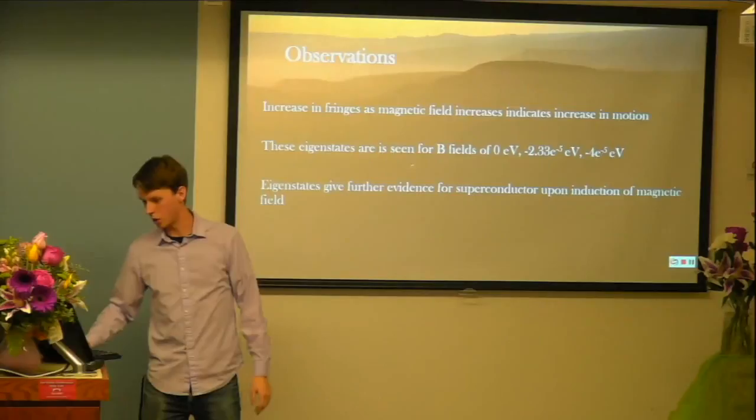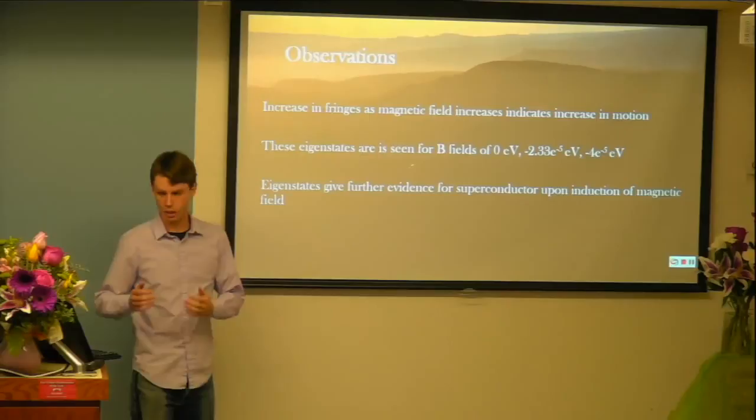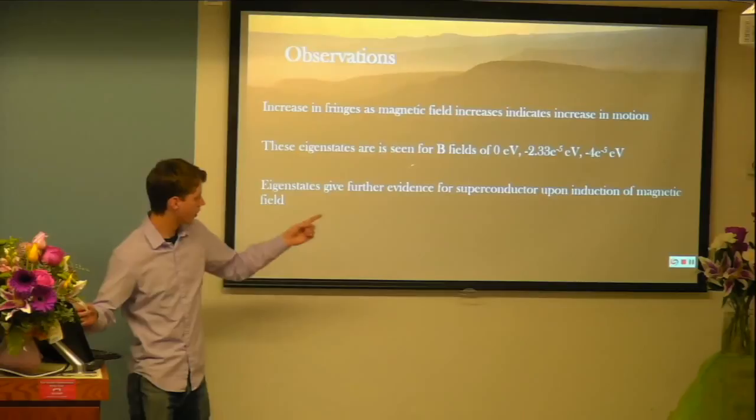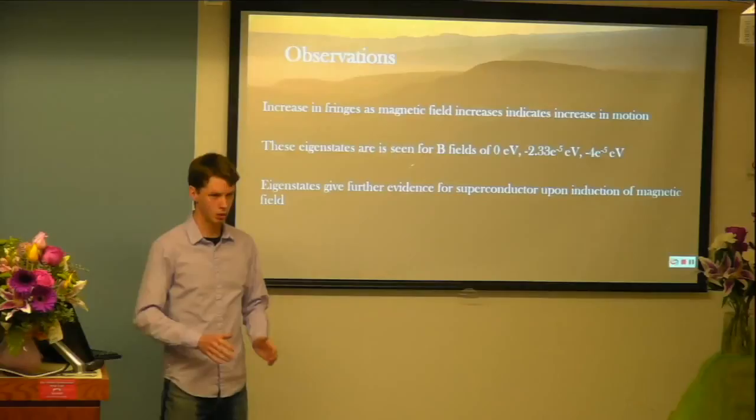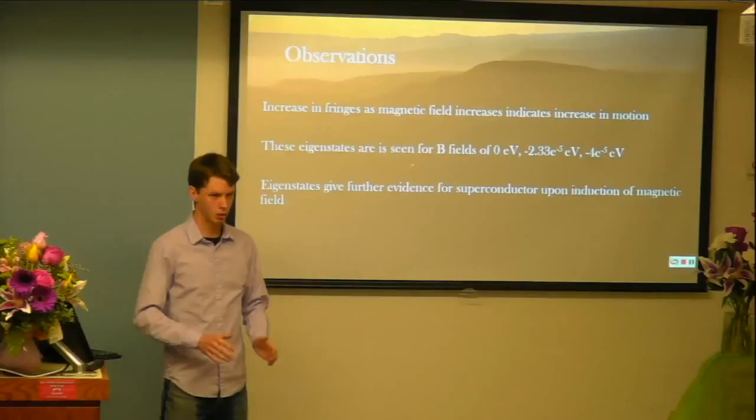And so observations. Again, as the fringes increase, that we just believe that there's an increase in motion. And the eigenstates in my units are not quite great, but they're there. And so basically what I took out of this is upon induction of a magnetic field, it could lead us to believe that a superconductor could be formed under the right conditions. Which I think is something that's very interesting.